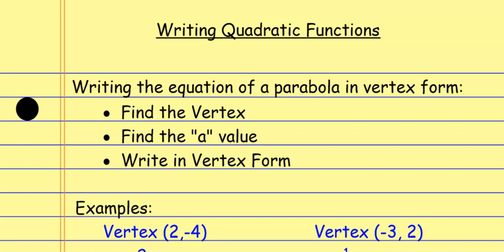So writing equations in vertex form: we find the vertex, the a value, we write the equation. Just remember that vertex form is y equals a times x minus h squared plus k. The x value for the vertex — it's the opposite of the x value for the vertex that we see here. But the k value — the y value for the vertex — is written exactly the way it's supposed to be. When we see a minus sign in a formula, it's the opposite of that value. And then the a value goes out front.